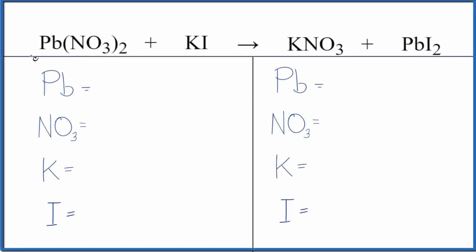Let's write the balanced chemical equation for Pb(NO3)2 plus KI. We have lead 2, this is the nitrate ion, and then we have potassium iodide. We'll also look at the type of reaction and then we'll look at the states.